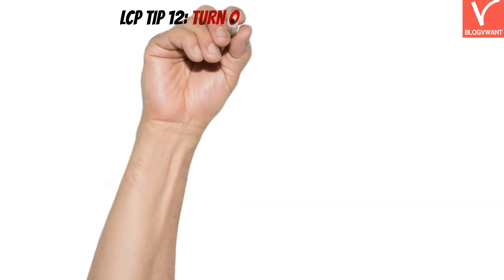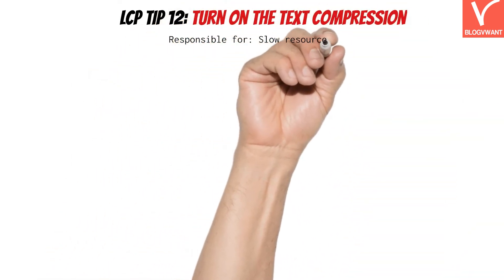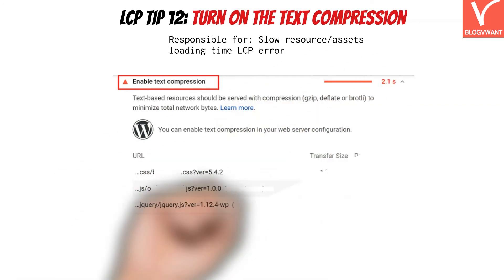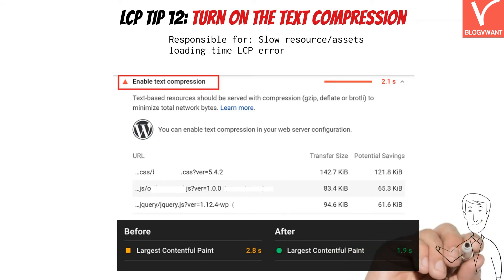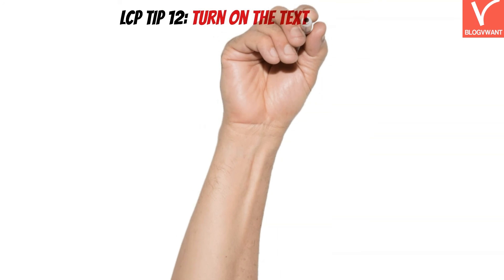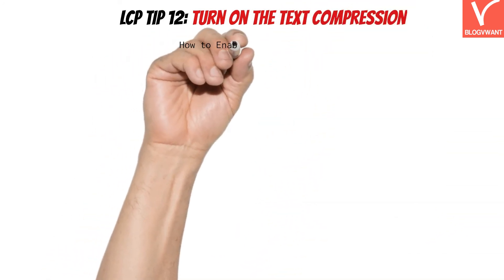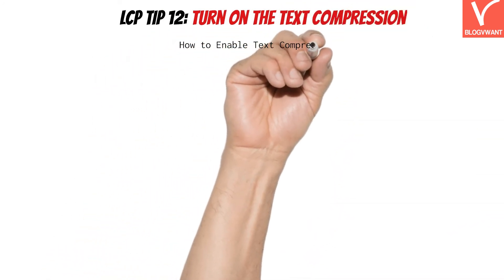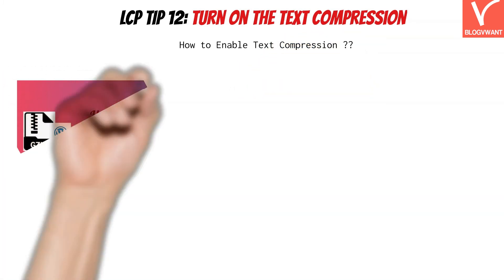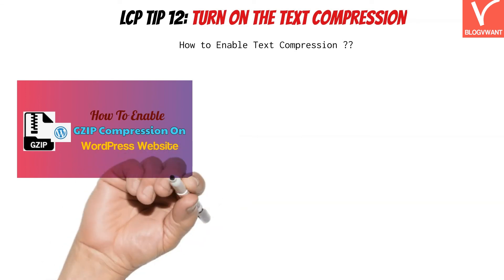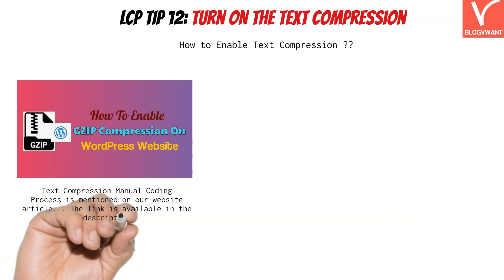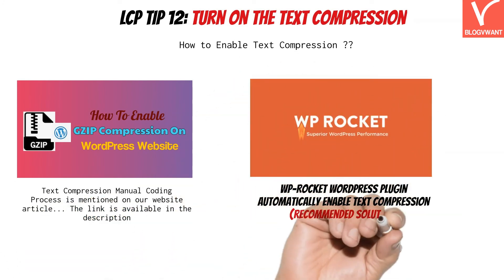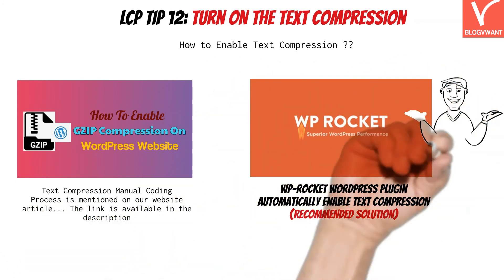LCP Tip 12: Turn on text compression. Like image compression, text compression also matters and affects the website's page loading speed and LCP score. If you see this LCP error in Google PageSpeed, it's time for action. Both manual coding and plugin approaches are available. In the manual method, you add a few lines of code in the website configuration file — the full process is covered on the website article. If you want to avoid manual coding, use the WP Rocket plugin, which enables text compression automatically upon plugin installation.